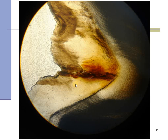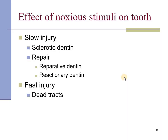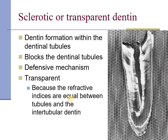Whenever the enamel is gone, the dentine reacts, giving rise to some amount of sclerosis because the odontoblastic processes deposit dentine and remove the refractive index difference. In case of a slow injury, sclerosis is seen and represented as reparative or reactionary dentine. If the injury is fast and the odontoblastic process does not have enough time to fill the dentinal tubule, they are filled with air and called dead tracts. Sclerotic or transparent dentine occurs when the refractive index becomes equal between the peritubular and intertubular dentine, and this principle has been used in age estimation techniques.